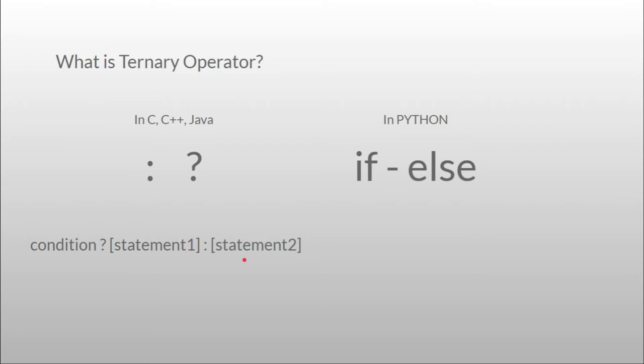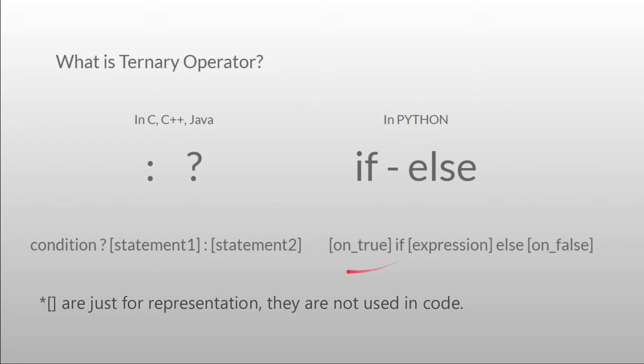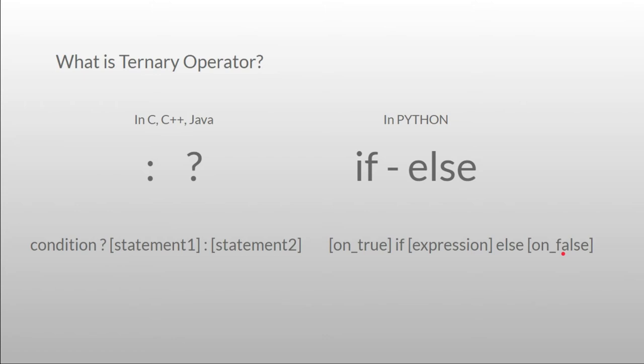In Python, the syntax of the ternary operator includes if and else. It is: statement on true, 'if' keyword, condition, 'else' keyword, then statement on false. So here we first write the statement to be executed when the condition is true, then we write the if condition, then else, and then the statement to be executed when the condition is false.